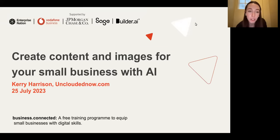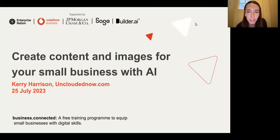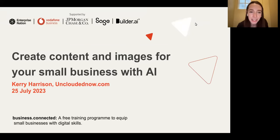Today's session is part of Business Connected. We've partnered with Vodafone Business to equip 800,000 small businesses over the next three years with different digital skills. The program is also supported by our digital partners JP Morgan, Sage and Builder AI. For more information please do visit the Business Connected Hub — we'll be dropping the link in the chat today.